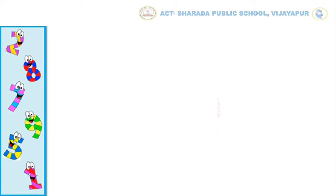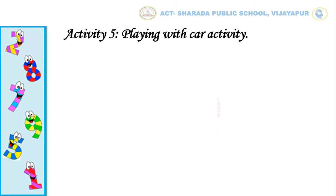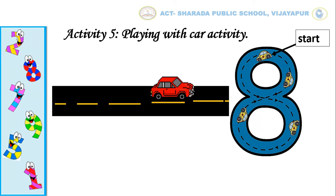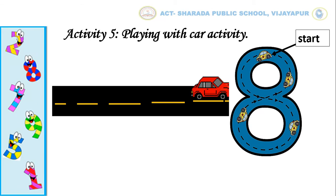Let's move on to the 5th activity — that is the playing with car activity. Children, in this activity you have to trace a toy car on number 8 by following the arrow mark and start from the starting point as shown in the given picture. In the same way, you have to complete this activity.